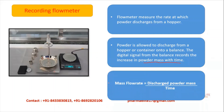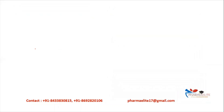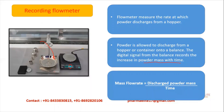The flow meter measures the mass flow rate, calculated as discharged powder mass divided by time. The discharged powder mass is measured by the weighing scale, and is divided by the time the powder takes to discharge from the hopper into the container onto the weighing balance. Recording flow meters are mostly used in industries.